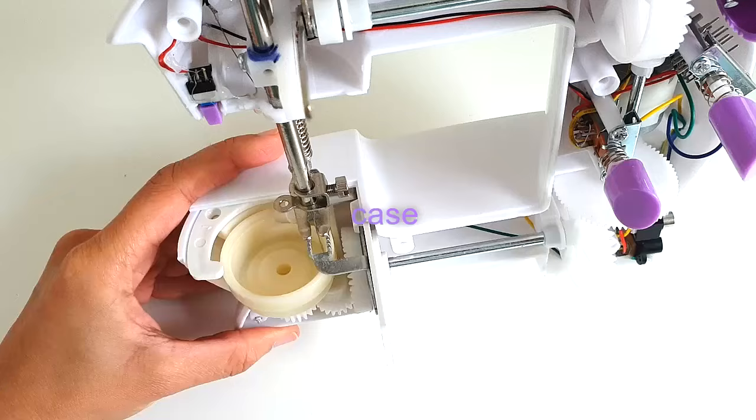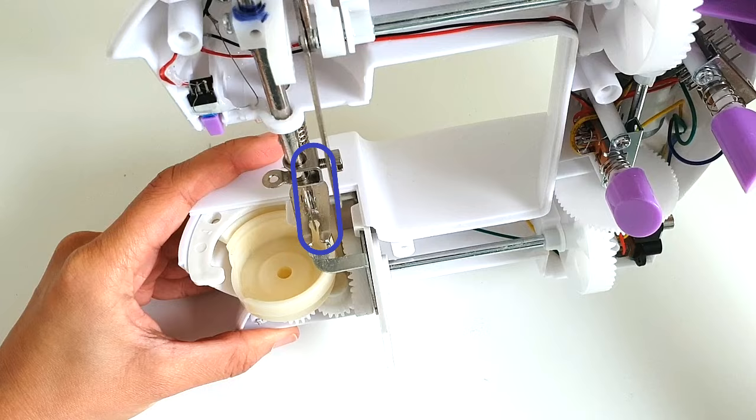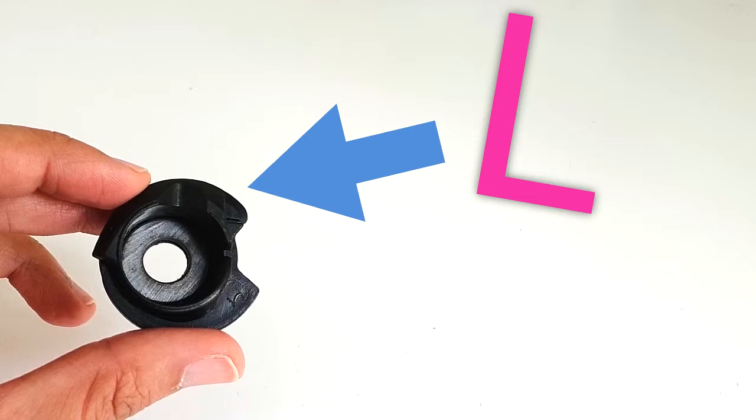Step 1: Turn the hand wheel so that the hook is facing towards you. Step 2: Identify the L-shaped groove on your bobbin case, which is right here.